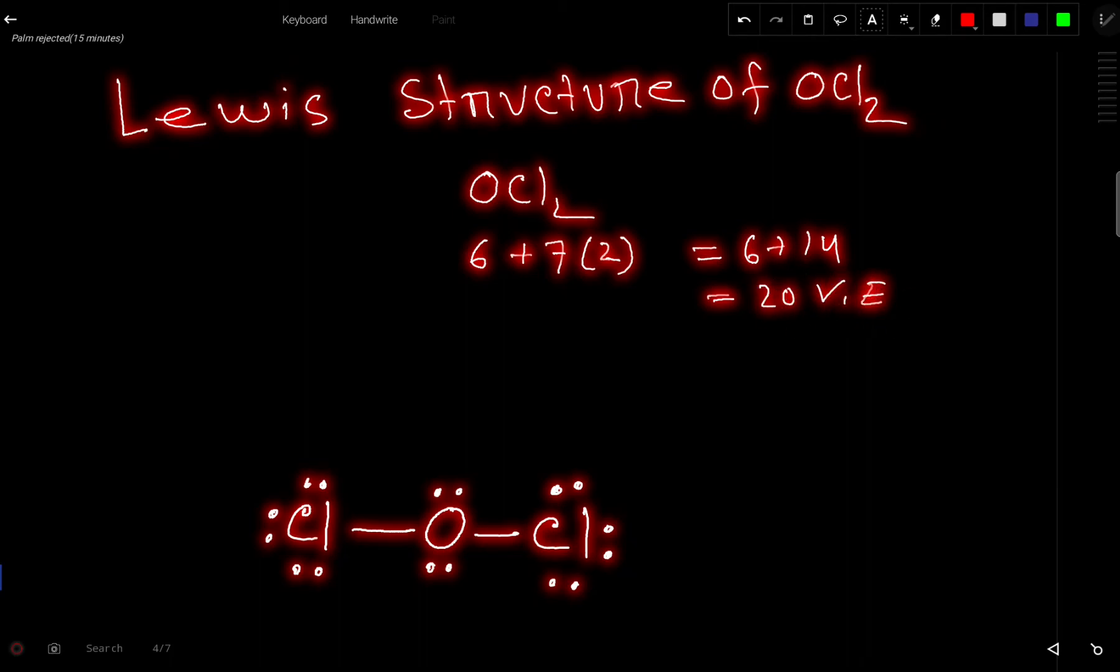These 20 valence electrons have 2 tasks at the same time. The first task is to connect these 3 atoms together and the second task is to satisfy the octet for all the atoms. So let us do that.